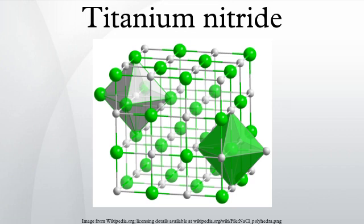Titanium nitride is an extremely hard ceramic material, often used as a coating on titanium alloys, steel, carbide, and aluminum components to improve the substrate's surface properties.